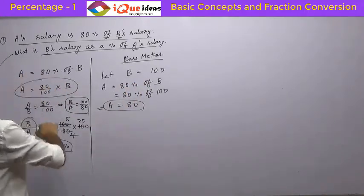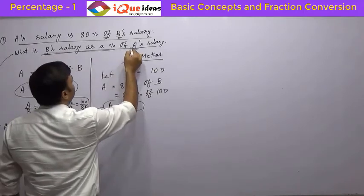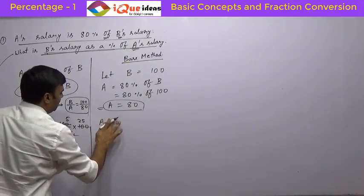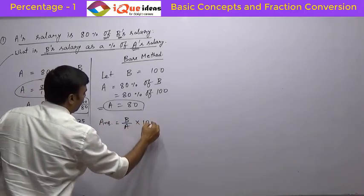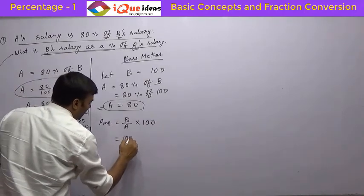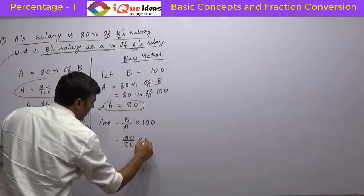Now read the question. What is B's salary as a percentage of A's salary? That means you need to find the answer as B upon A into 100. Just put the values of A and B that you have taken. B is taken as 100, A is taken as 80 into 100.